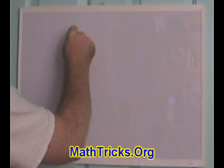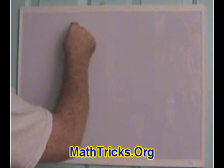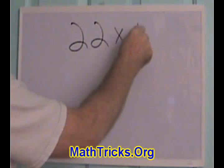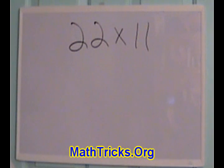Let's do another example. Let's take a very easy one: 22 times 11. And, of course, the answer is 242.